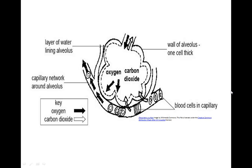The alveolar wall and the blood capillary make up the respiratory membrane, through which these gases diffuse across. Requirements that must be met for a respiratory membrane to allow for the exchange of these gases are that it must be moist and thin.